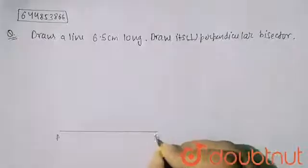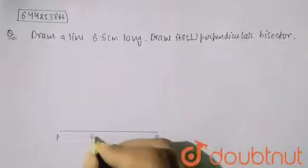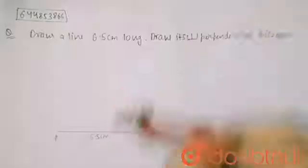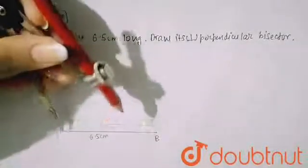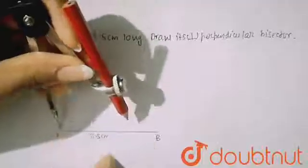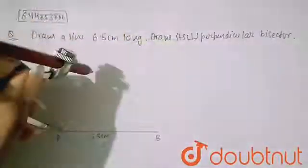Let's name it as AB, 6.5 centimeter. Now you have to draw a perpendicular bisector. So from A, more than half of AB you have to take, and you have to mark at this point.